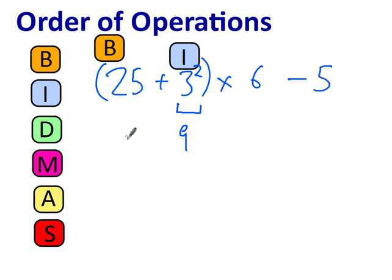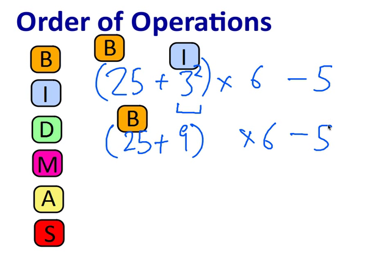Baby steps. 25 plus 9, that is in the brackets. So I get to do that now. 25 plus 9 is 34. 34 times it by 6, take away 5. We have a multiplication. 34 times 6. 3, which is really 30. 30 times 6 is 180. 4 times 6 is 24.